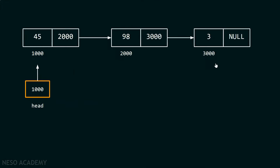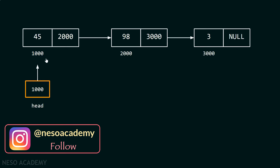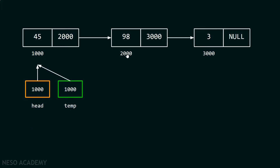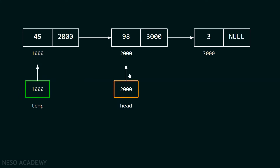Let us suppose we already have this list and the head pointer is pointing to the first node. We want to delete this particular node. For this purpose, we need to create a pointer, temp, which must point to the first node of this list. And we have to move our head pointer so that it can point to the next node. We can see that this node has to be deleted.